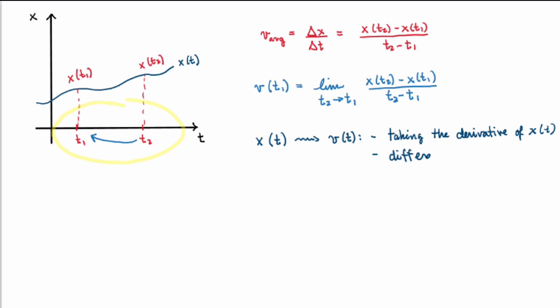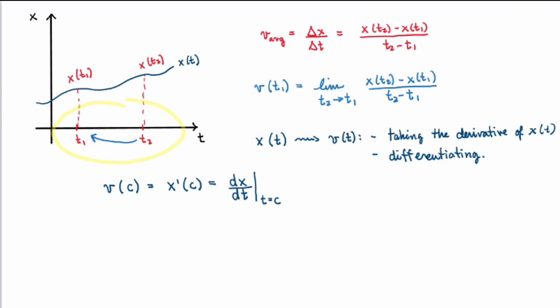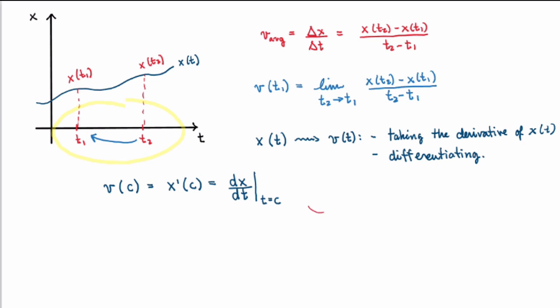And in fact, it also has a special notation. So if I want to calculate the velocity at a certain time, say t equals c, I'm going to write that as x'(c). That means the derivative of the function x(t) evaluated at t equals c. Or equivalently, I can write this as dx/dt, which means derivative of the function x with respect to the variable t, evaluated at t equals c. And this whole process here of taking derivatives, studying their properties and so on, has a name. This is called differential calculus.